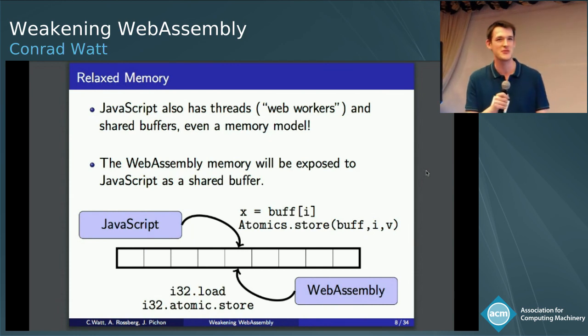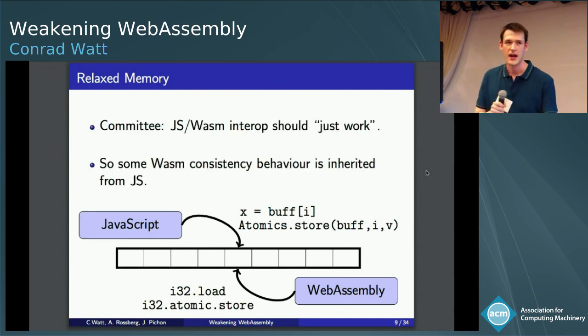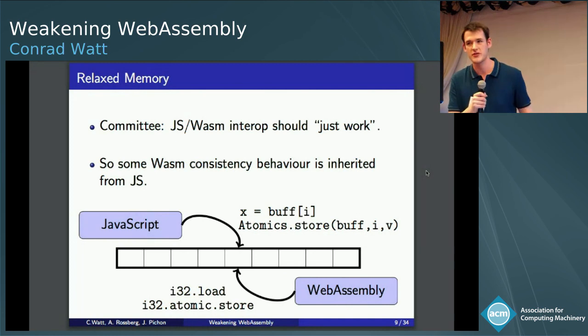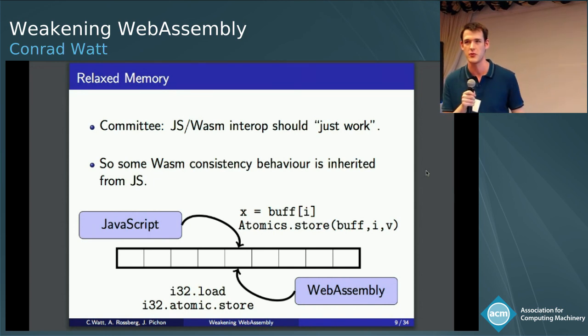So you may have thought JavaScript was single-threaded, but actually this isn't completely true. And in fact, WebAssembly and JavaScript need to interoperate, because the mechanism by which this happens is a WebAssembly memory is exposed to JavaScript as one of these shared buffers. And the JavaScript and WebAssembly standards committees kind of believe that interoperation should just be pretty seamless. And this isn't an unreasonable belief, because JavaScript's concurrency is specified at a very low level. What this means for us is when we're trying to make a formal model of WebAssembly concurrency, some of the behaviors have to just be forced by what JS has already chosen to do.